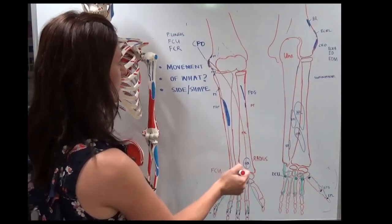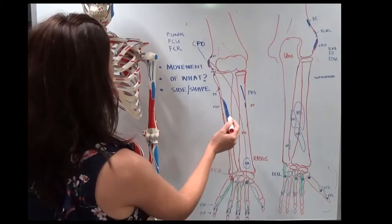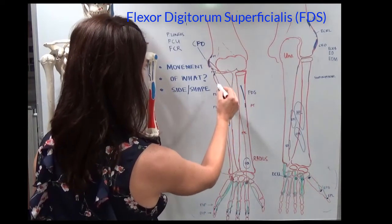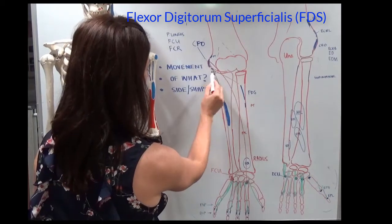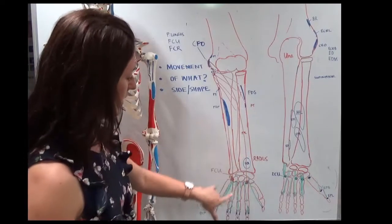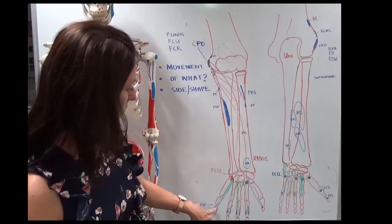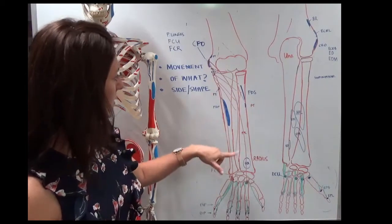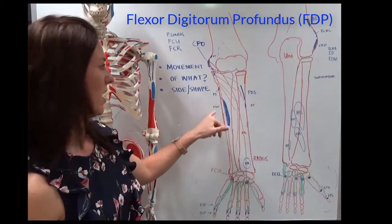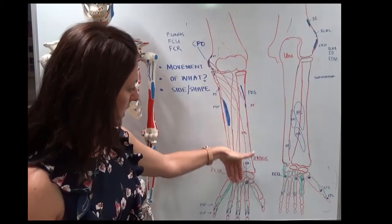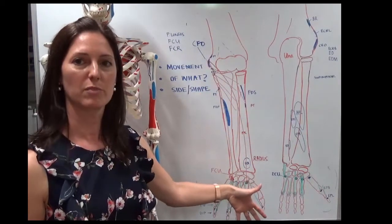And in this case, we've got a double set. So we've got a superficial one, which originates here, here, and here. So a nice big broad muscle. And that extends all the way down to these four digits, stopping on the middle phalanx of each of those four digits. Deep to that is a backup or a spare tire. The flexor digitorum profundus, which originates here, runs deep, and this time runs all the way to the tip of the fingers.